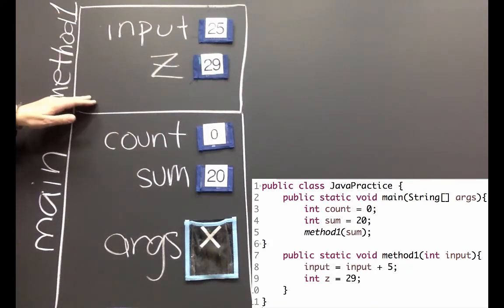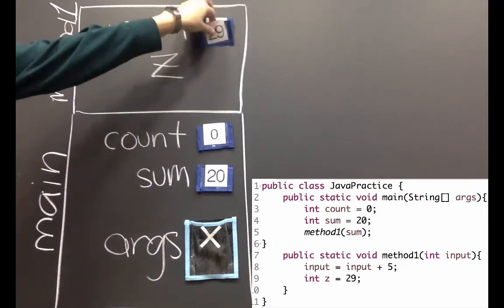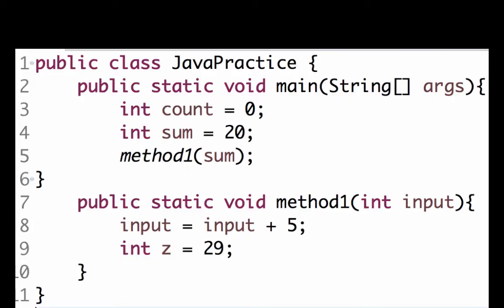Now we will have executed all the code in method one and it'll return to the line that called it from within main, and what happens is this stack frame is no longer accessible. Here's the code, see if you can trace it just like we did in the video.